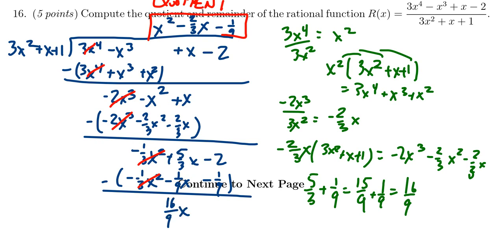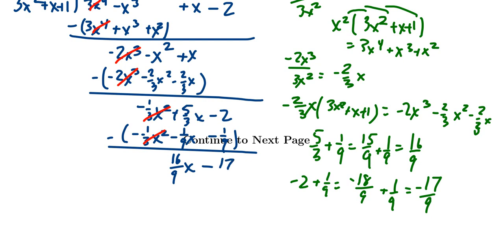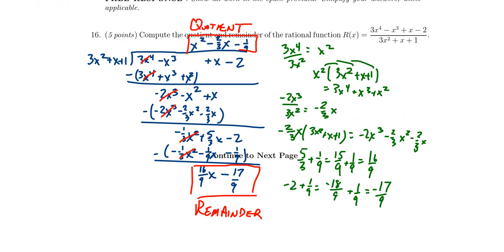So we record 16/9 x. For the constant term: negative 2 plus 1/9, rewriting as negative 18/9 plus 1/9, gives negative 17/9. That gives us the remainder: 16/9 x minus 17/9. To summarize: the quotient was x squared minus 2/3 x minus 1/9, and the remainder was 16/9 x minus 17/9.